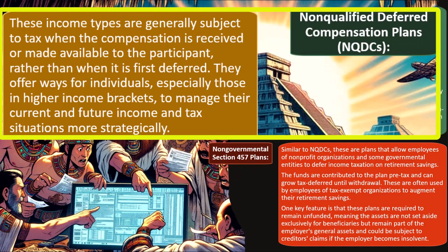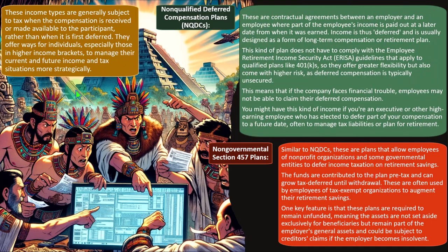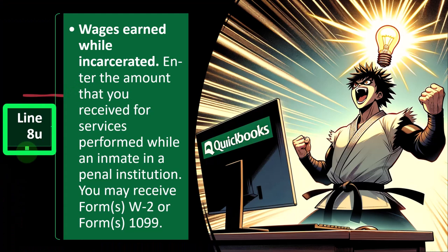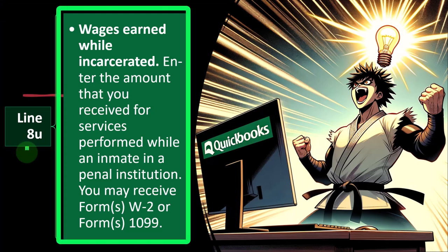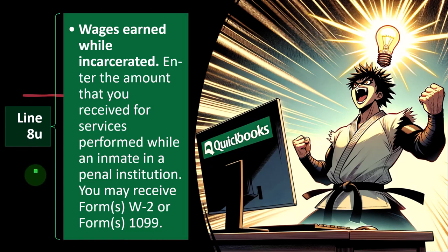These income types are generally subject to tax when the compensation is received or made available, rather than when it is first deferred. They offer ways for individuals in higher income brackets to manage their tax situations more strategically. Line 8U — wages earned while incarcerated. Enter the amount received for services performed while an inmate in a penal institution. You may receive a Form W-2 or 1099 in that situation.